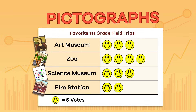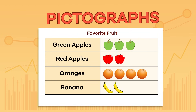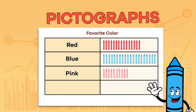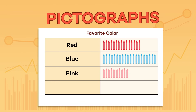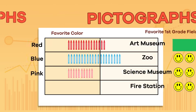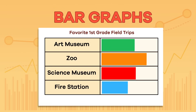Pictographs always use pictures to show information. You could use pictures of apples and oranges if the graph is about fruit, or crayons for a graph about colors. Let's move on to another type of graph.